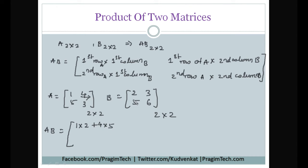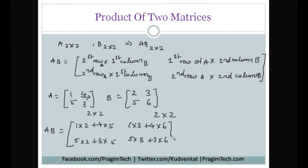For the first row and second column: 1×3 + 4×6. For the second row and first column: 5×2 + 3×5. For the second row and second column: 5×3 + 3×6. This gives us: 2+20 = 22, then 3+24 = 27, then 10+15 = 25, and 15+18 = 33. So the product matrix AB is [22, 27; 25, 33].